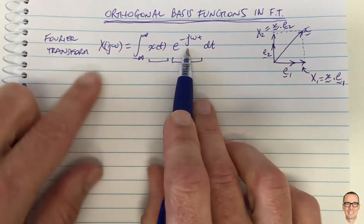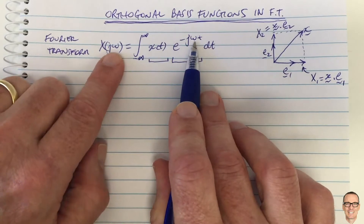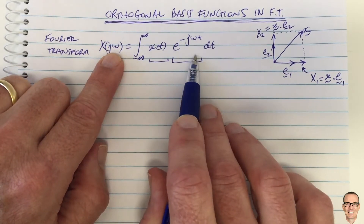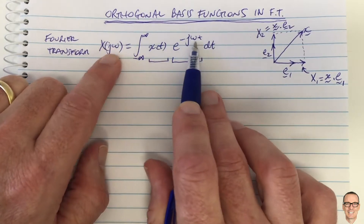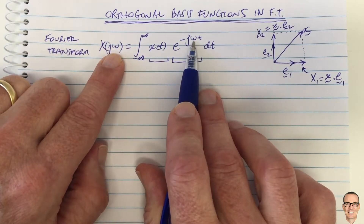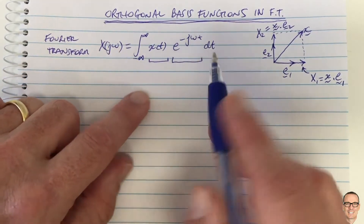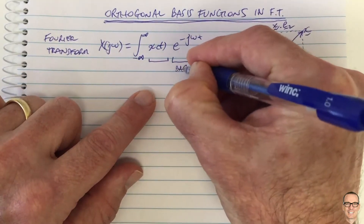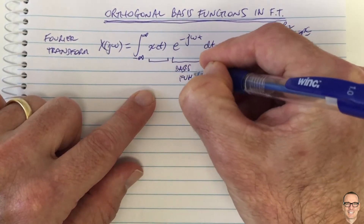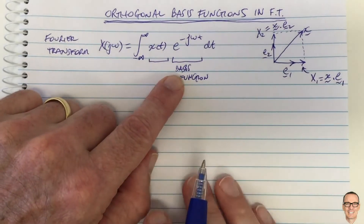We're going to do it for all different values of omega. Every different value of omega is a different frequency, and each one is a different basis function. So we do it for omega 1, omega 2, omega 3, and so on for all the different values of omega. Now what does it mean to say that these basis functions are orthogonal?